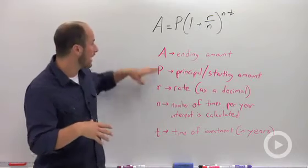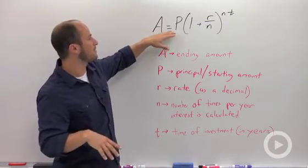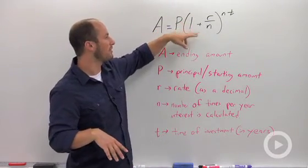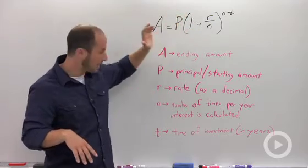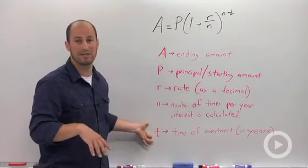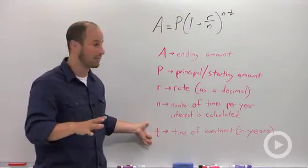So what we have is A equals P times 1 plus r over n to the nt. And what I have written down here is what each of those variables stands for.